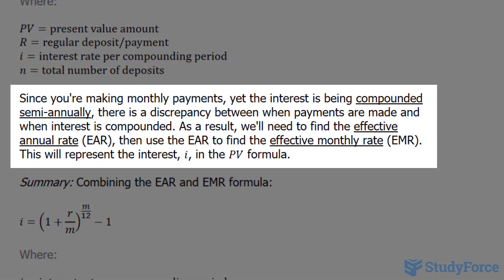Since you're making monthly payments, yet the interest is being compounded semi-annually, there's a discrepancy between when payments are made and when the interest is compounding. As a result, we'll need to find the effective annual rate, then use the EAR to find the effective monthly rate, represented as EMR. This will represent the interest i in the PV formula.